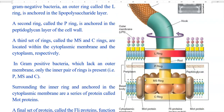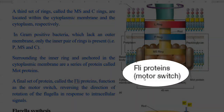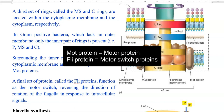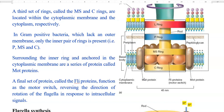In gram positive bacteria, which lack an outer membrane, only the inner pair of rings are present — that is, the MS and C rings alone are present. Surrounding the inner ring and anchored in the cytoplasmic membrane are a series of proteins called motor proteins. There is another set of proteins called FLI proteins which function as a motor switch. Motor proteins refer to the motor, and FLI proteins refer to the motor switch. It helps in reversing the direction of rotation of the flagella in response to intracellular signals received by the cell.